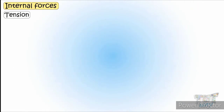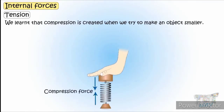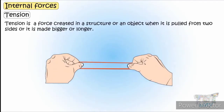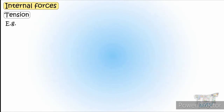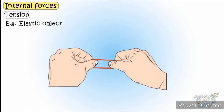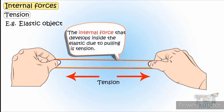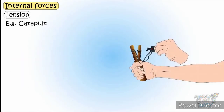Now let's look at tension. While compression pushes objects together, tension is a force that makes a material go longer — it stretches the material. Look at this rubber band: when you apply force the material expands, and its internal force, which we call tension, prevents the rubber band from breaking. If you apply a force greater than the tension of the rubber band, the rubber band will break.